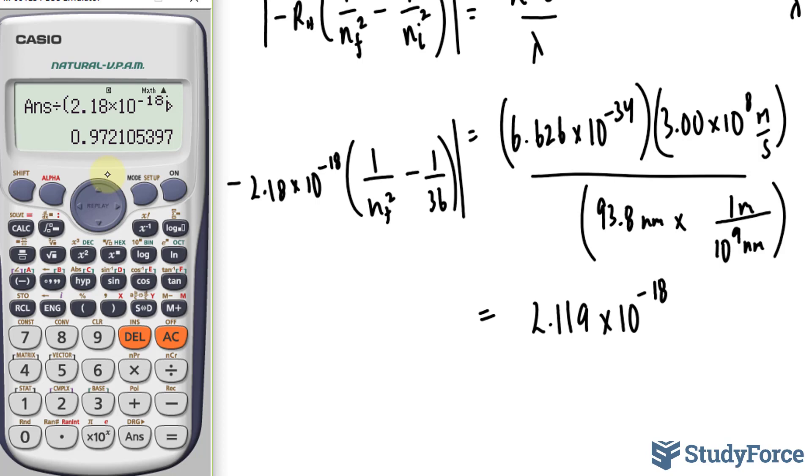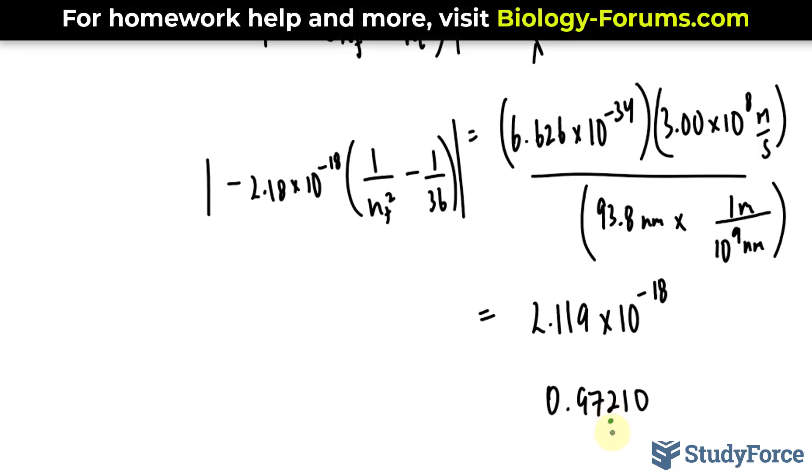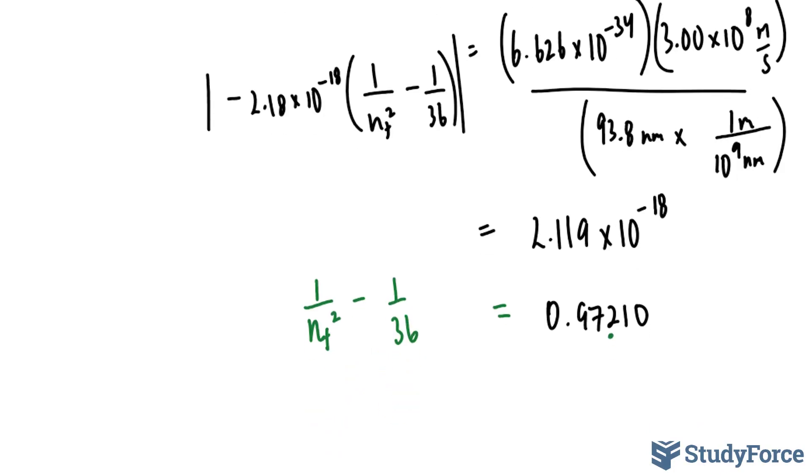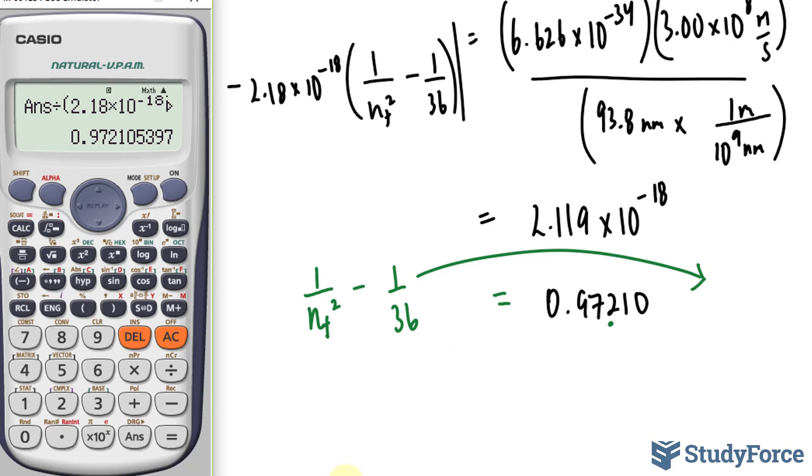That's it. But I'll write down 1, 0, just in case. 0.9721, 0, keeping in mind that this is the last significant figure that we keep. So we have this number is equal to 1 over n final squared minus 1 over 36. By having divided this factor, I don't need these brackets anymore, so I'll take this number over, and I end up with the number here, plus, because it's negative, 1 over 36.